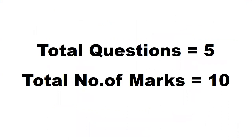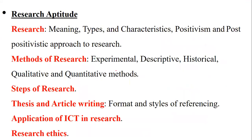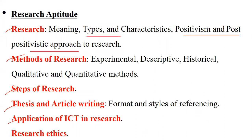The total questions from this unit are 5, with total marks allotted being 10, so every question carries 2 marks. The syllabus consists of research methods, steps, thesis, application, and research ethics. In yesterday's class, we already completed positivism and post-positivistic approach. Today we are going to see some types as well as some methods. Let's start the session.